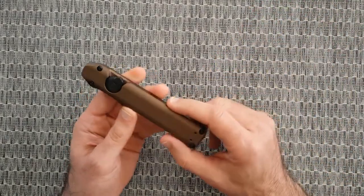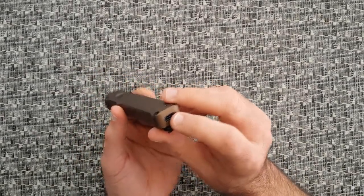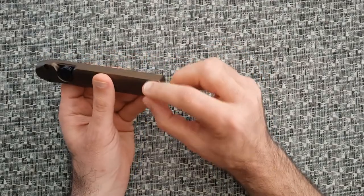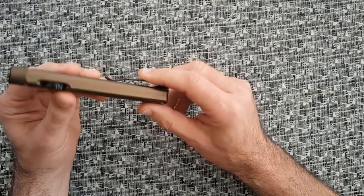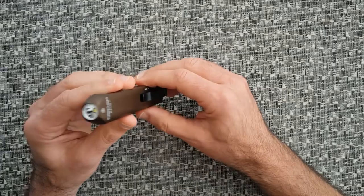It's USB-C rechargeable. It has this pocket clip that can be attached on both sides of the flashlight. Made from durable anodized aluminum, tempered glass lens, waterproof up to one meter, lifetime warranty. It's 5.5 inches long, which is 138 millimeters.